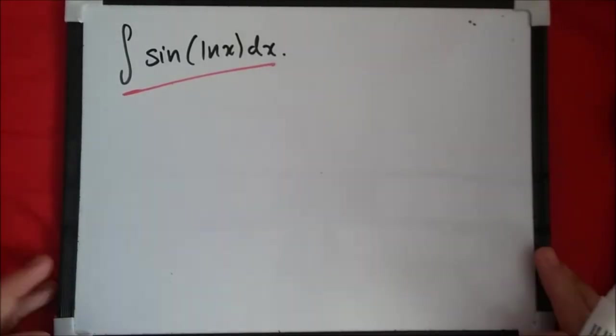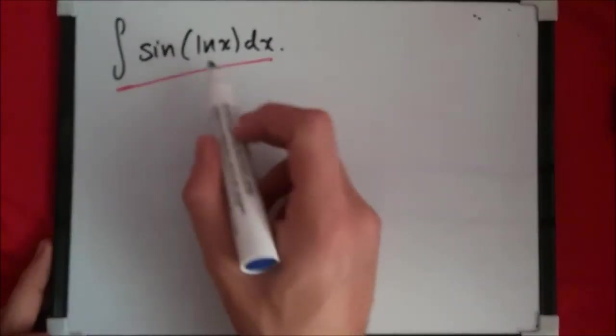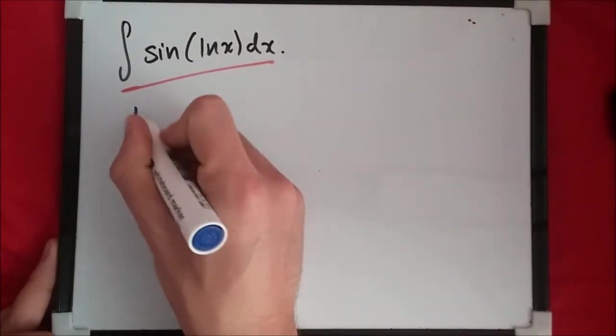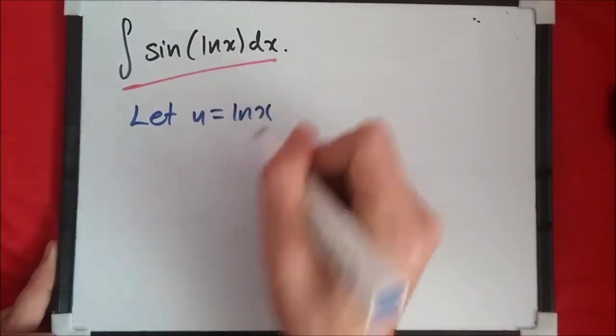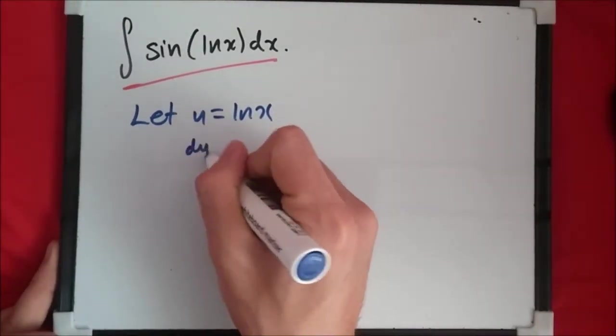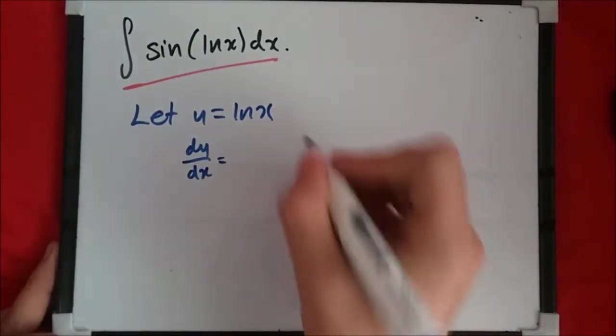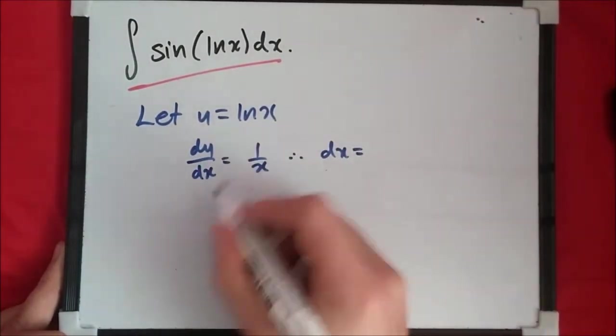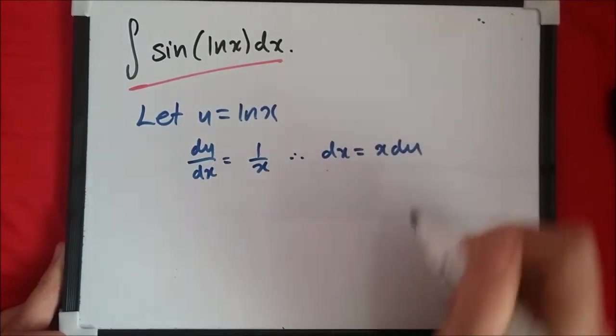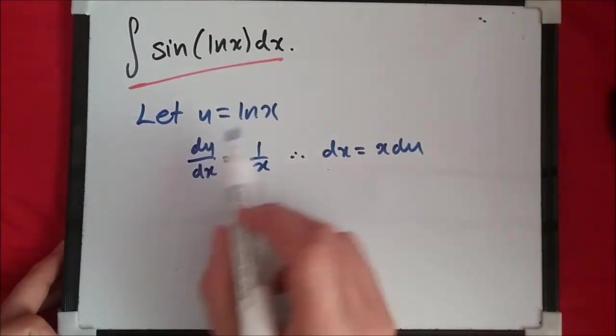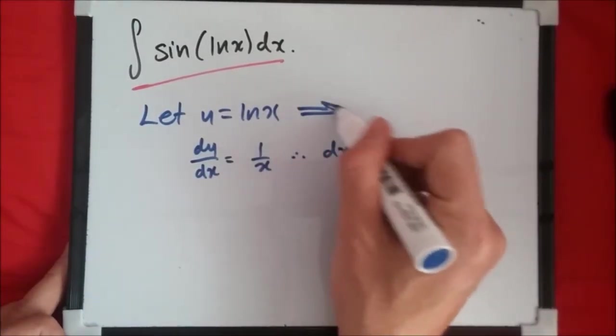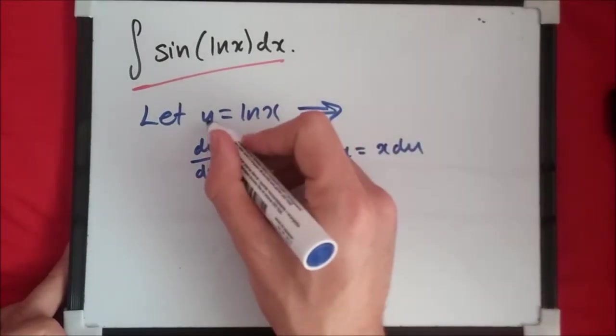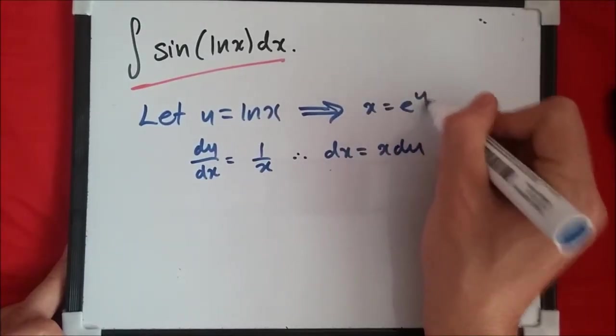Let's see what my choice was for the substitution. Looking at log X, I have a feeling this can be dealt with nicely. Suppose we let u equal log X. Taking the first derivative, du over dx we get one over X, and therefore dx equals X du. Now how do we deal with this X? Let's look at this expression. We can make X the subject by taking an exponential on both sides, giving us X equals e to the power u.